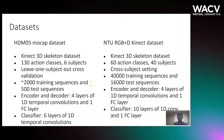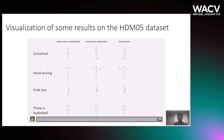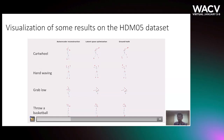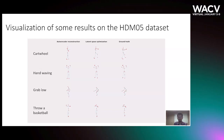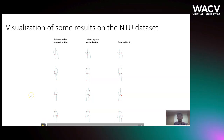These are some visualizations of the results on the HDMO5 dataset. As we see, the baseline autoencoder reconstruction does not do well, while the proposed latent space optimization does much better. This is also true for the NTU dataset, where the latent space optimization method performs much better for these sequences compared to the baseline autoencoder reconstruction.